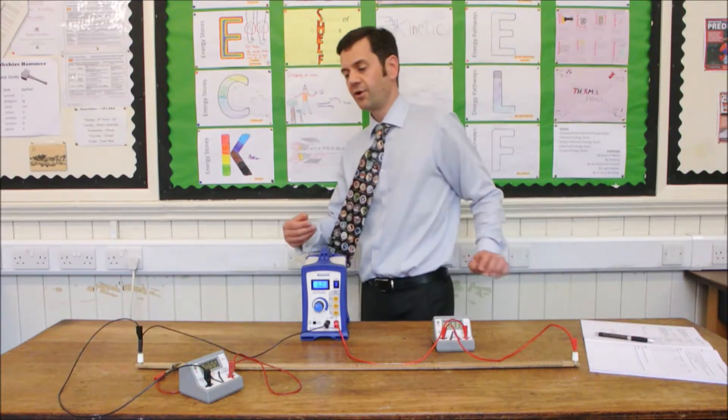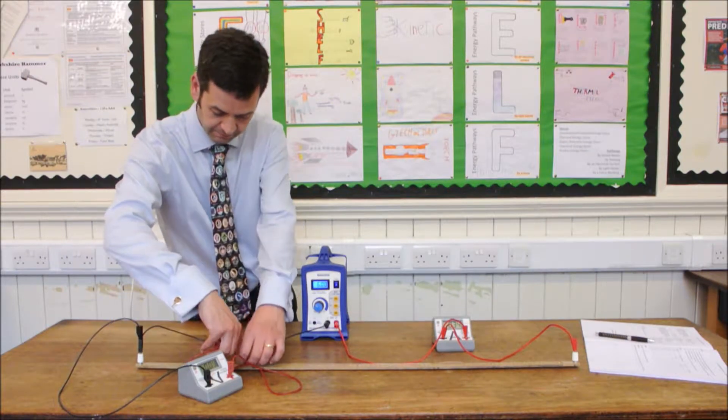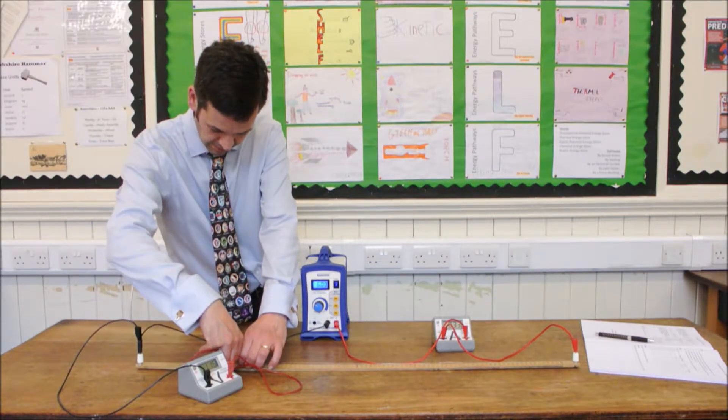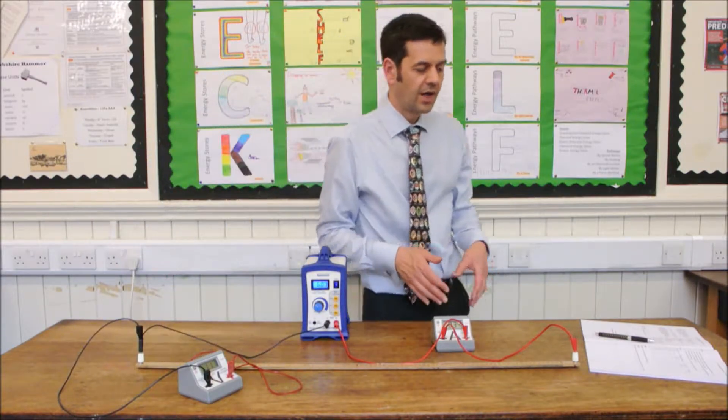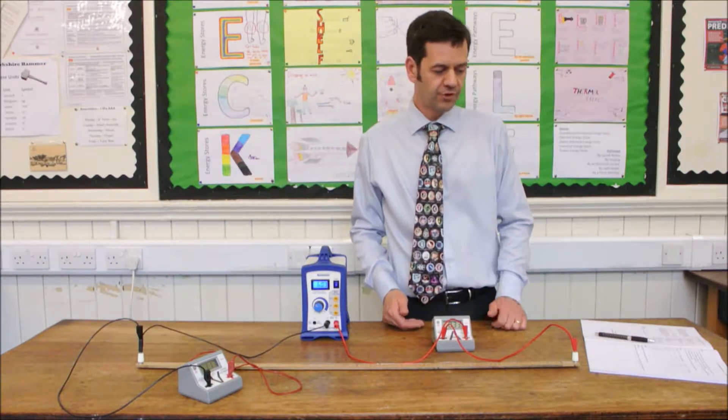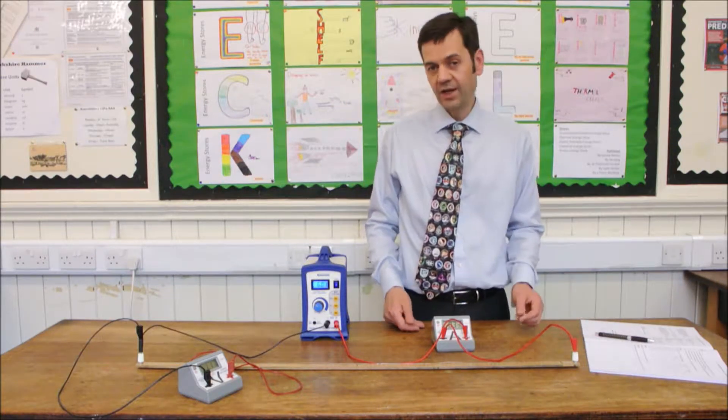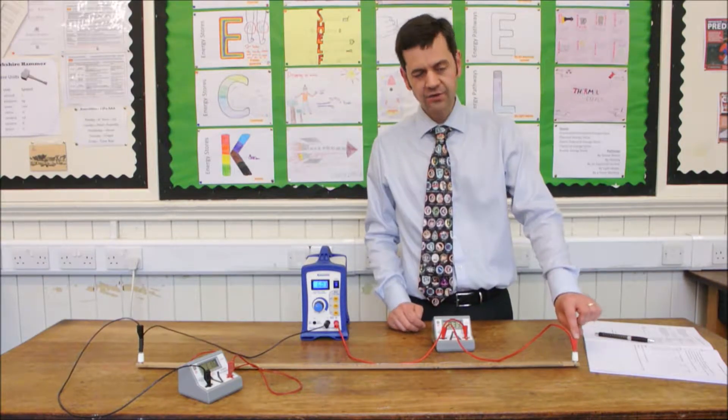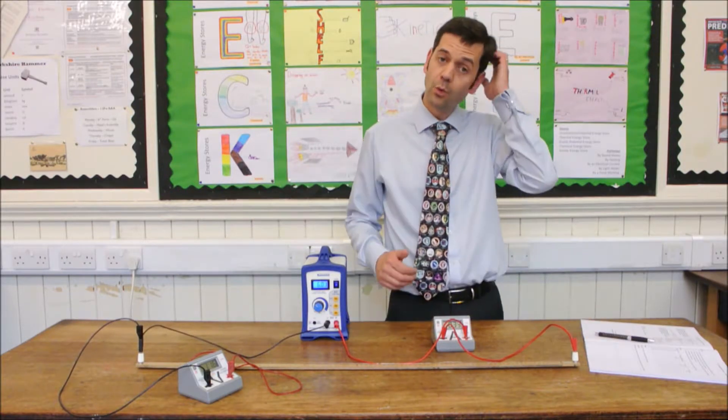And then I'm going to carry on increasing the distance by 10cm each time, measure the potential difference, measure the current, and that will build me up all of the results until I get to a meter. At one meter I would take off the crocodile clip and insert the connector straight into the top here so we get the full one meter length.